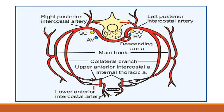These arteries arise before the coarct segment for the first nine intercostal spaces. The 10th and 11th anterior intercostal arteries arise from the musculophrenic artery. That covers the anterior intercostal spaces.